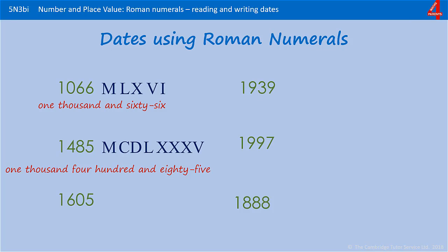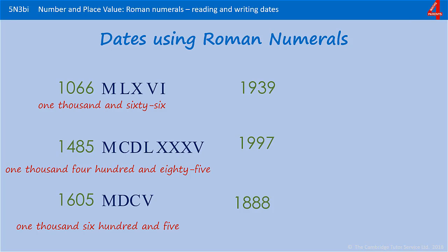The next one, 1605 — the Gunpowder Plot, the reason we celebrate by setting off fireworks every Bonfire Night. 1000, 600 and 5. 1000, then 600 is 100 more than 500, so that's DC. We don't have any tens, so we just add on the 5. It's interesting to see that even though 1605 is a bigger number than 1485, it uses fewer numerals.